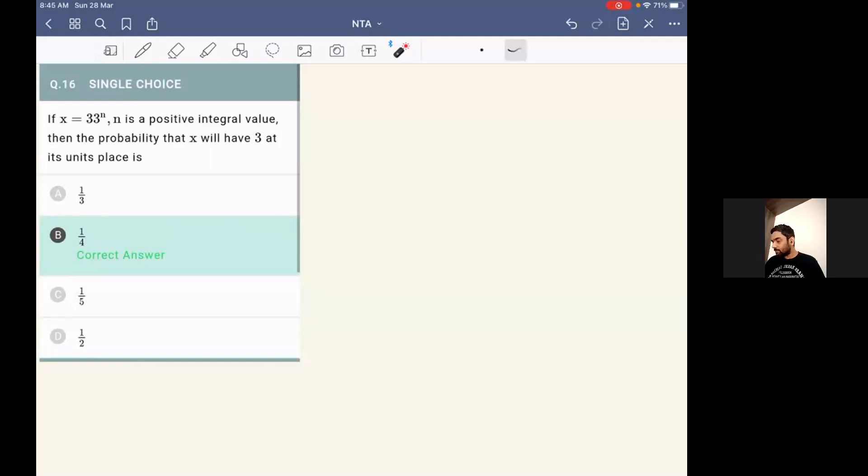So the expression over here, we have got this 33 power n. Now we know that whenever we are finding out any power of a natural number, the unit place repeats itself in every fourth power.